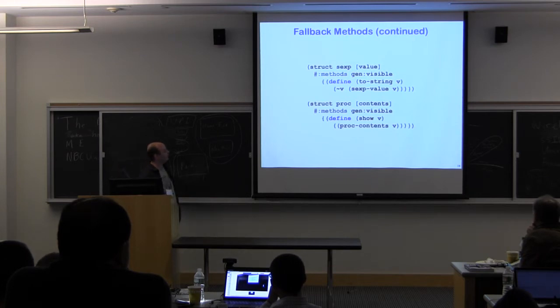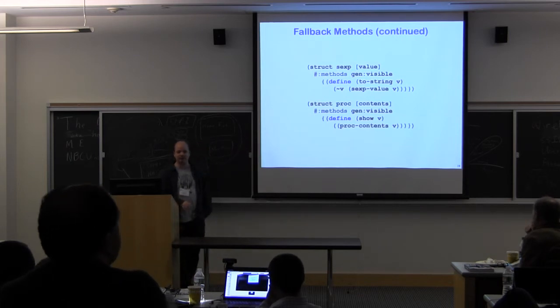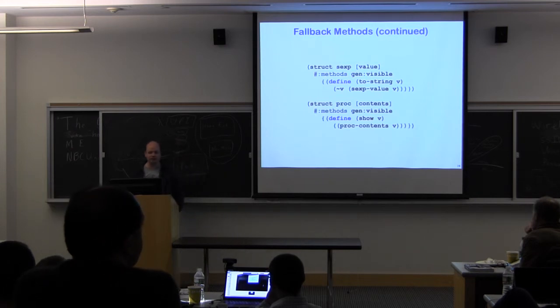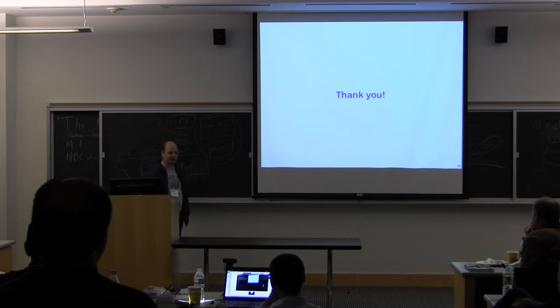And so if we implement something, we can either, if we want something that we can show, we can either define to-string or we can define show. And here's just two different types that implement gen:visible with different methods. So you can just provide whichever ones you want to provide and let fallbacks fill in most of the rest. That's the really short, short version of what's new. Thank you.